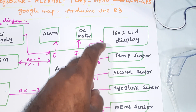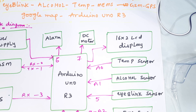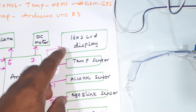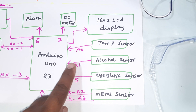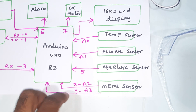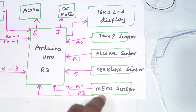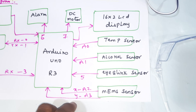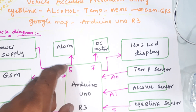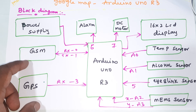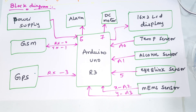A 16x2 LCD display is connected with RS, Enable, D4, D5, D6, D7 on pins 8, 9, 10, 11, 12, 13. Temperature sensor is connected to A0, alcohol sensor to A1, eye blink sensor to pin 5, MEMS accelerometer to A2 and A3 for X and Y coordinates. Engine is on pin 7, alarm on pin 6, GSM on RX/TX pins 0 and 1.